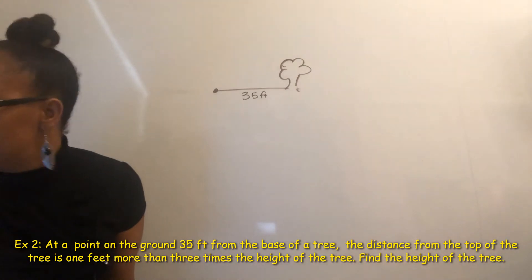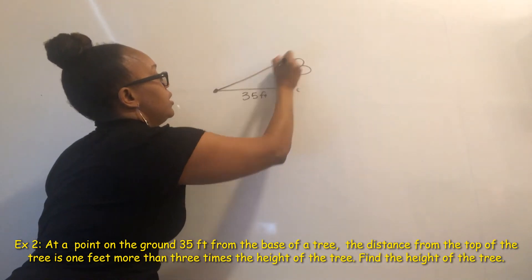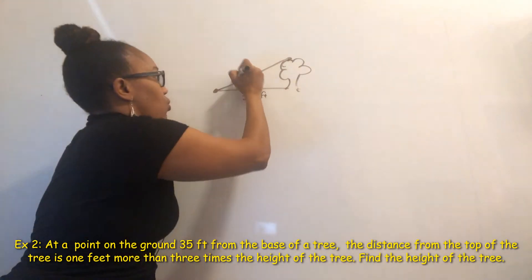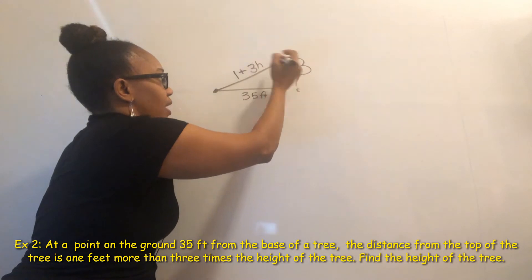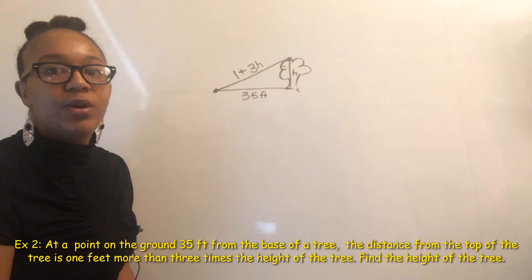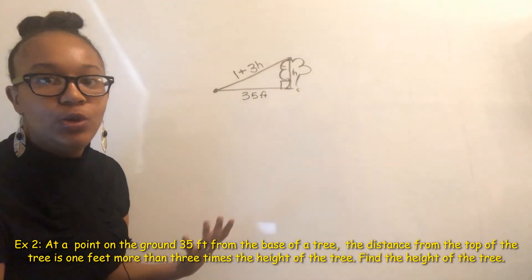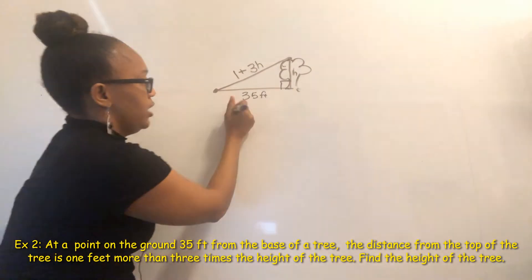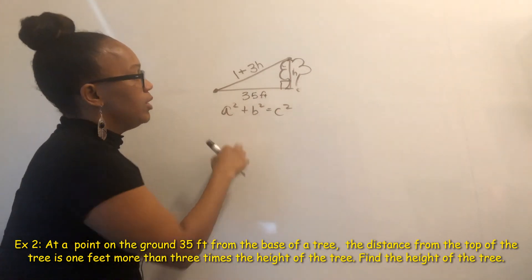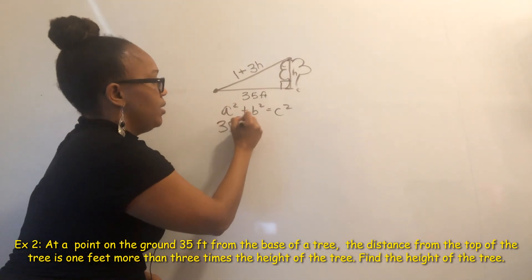The distance to the top of the tree is one foot more than three times the height of the tree, which I'm calling H. So the hypotenuse is one plus three H. We end up with a right triangle. Whenever you have a right triangle, you can use the Pythagorean theorem: A squared plus B squared equals C squared. A and B are the legs and C is the hypotenuse.